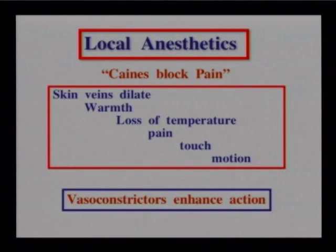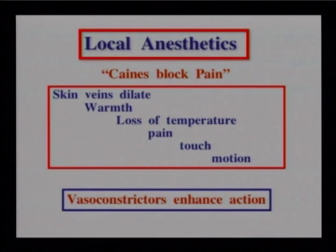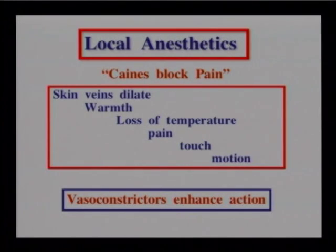This segment covers drugs affecting the central nervous system. Local anesthetics — the 'caines' (xylocaine, novocaine, carbocaine) — block pain. When a local anesthetic is given, the skin veins dilate and there is a feeling of warmth; then the patient loses temperature sense, then pain, touch, and motion in that order. When it wears off, it returns in reverse order. Local anesthetics are sometimes given with vasoconstrictors like epinephrine, which slows absorption, enhances, and prolongs the action.